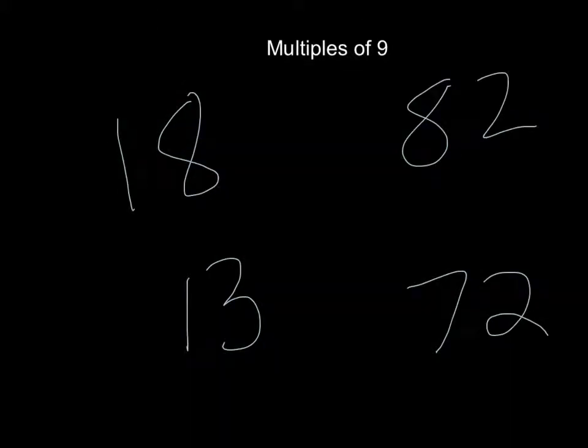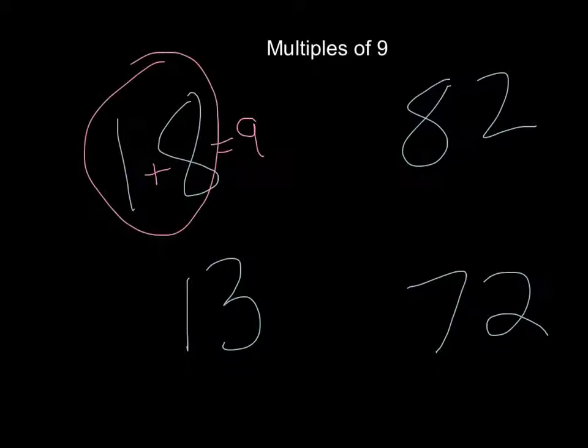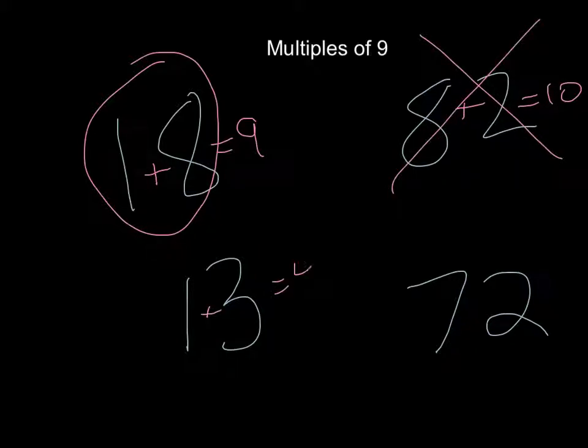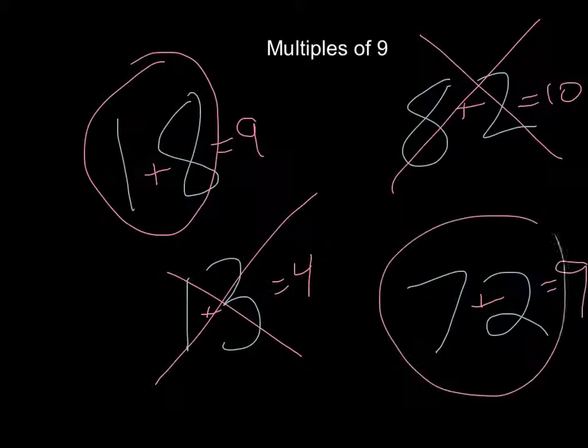Finally, I know a number is a multiple of 9 if the digits in its number add up to 9 or are a multiple of 9. So, 1 plus 8 and 18 equal 9. 18 is a multiple of 9. 8 plus 2 equal 10. 82 is not a multiple of 9. 1 plus 3 equal 4. 13 is not a multiple of 9. 7 plus 2 equal 9. 72 is a multiple of 9.